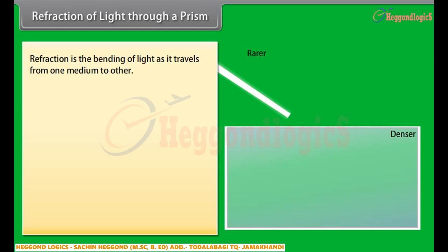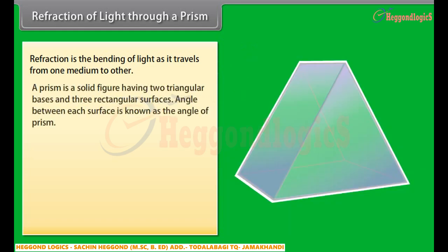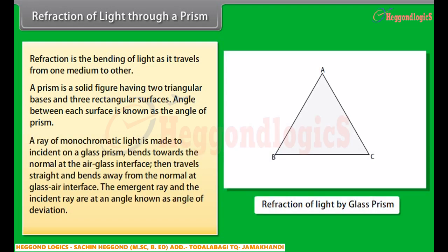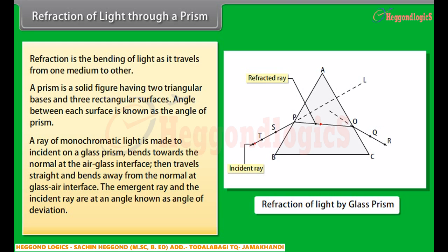Refraction of light through a prism: refraction is the bending of light as it travels from one medium to another. A prism is a solid figure having two triangular bases and three rectangular surfaces. The angle between each surface is known as the angle of prism. A ray of monochromatic light incident on a glass prism bends towards the normal at the air-glass interface, then travels straight and bends away from the normal at the glass-air interface. The emergent ray and the incident ray are at an angle known as the angle of deviation.